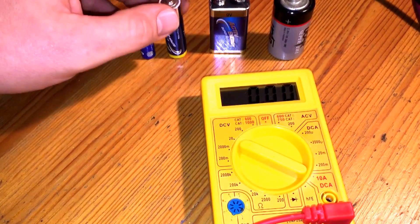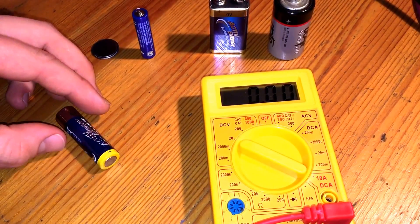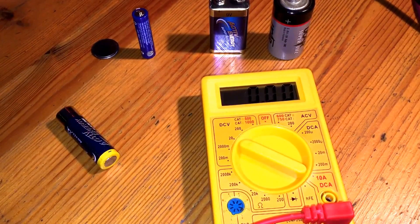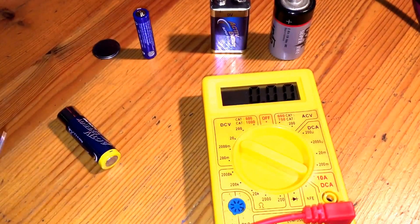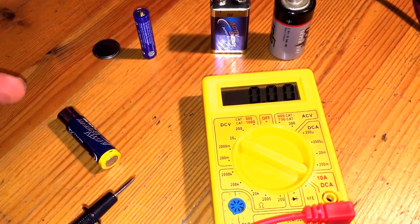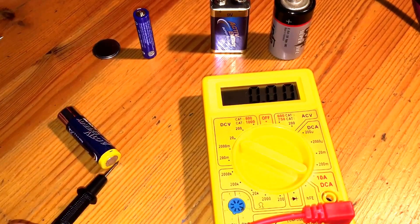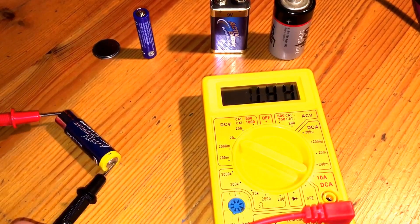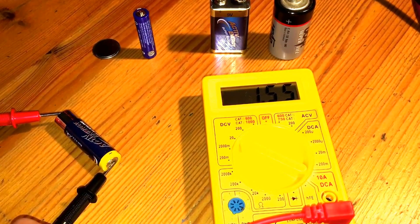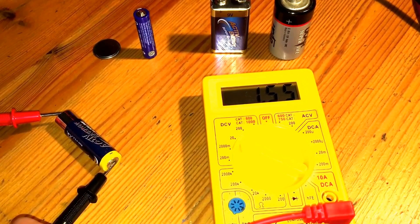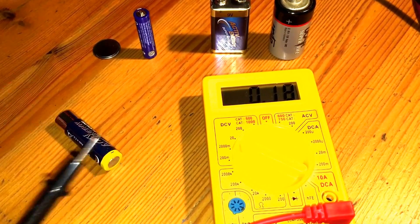Now we will check an AA battery. That's a magnum. Minus, plus, minus, plus. Take a look at the display. 1.55. That's full. Yoo-hoo!